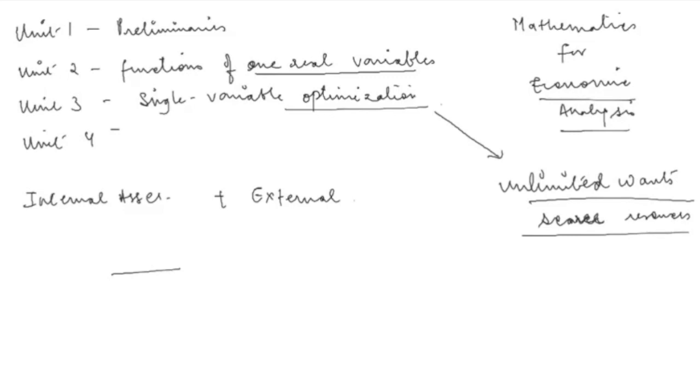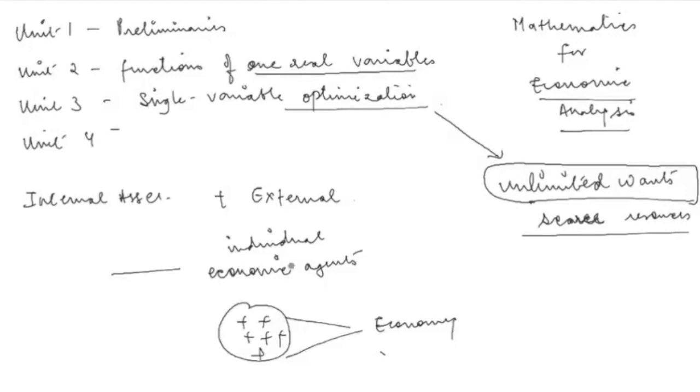So as economic agents, the economy is made up of all these small individuals. Microeconomics - you are talking at an individual level. What does an individual consumer do? How would an individual firm behave? But when you add all of these individuals, you get the entire economy. And this is the entire economy that we are trying to understand. But we know that whether you talk about individual agents, or you talk about the economy as a whole, this problem of unlimited wants is present in both the situations.